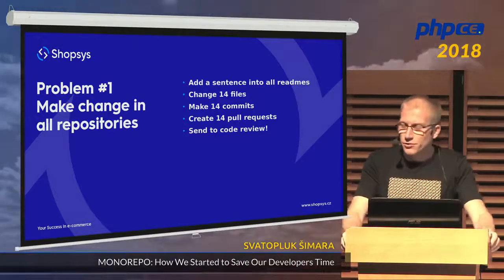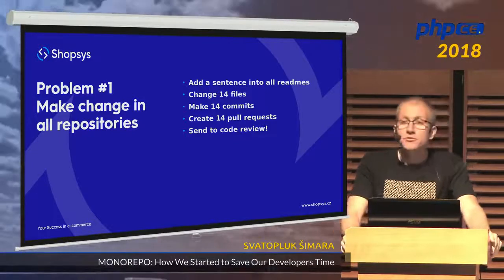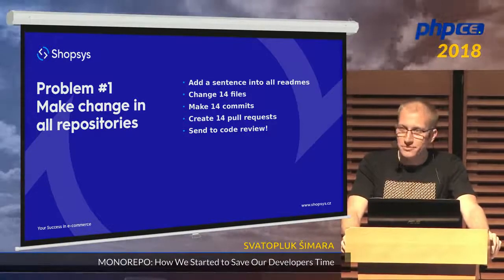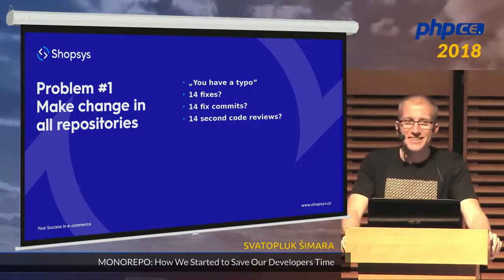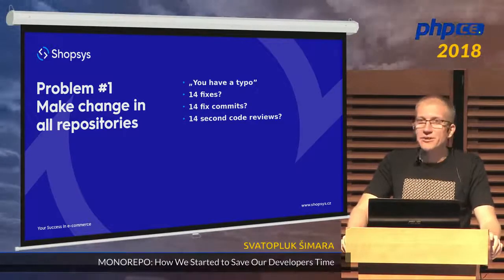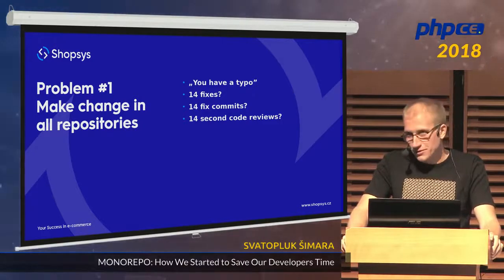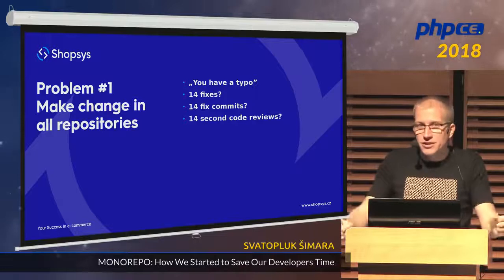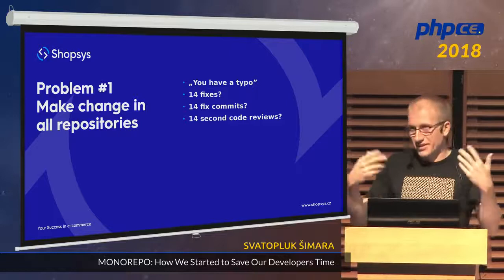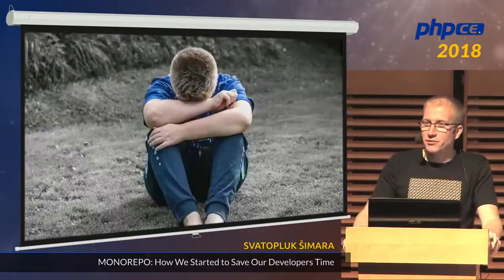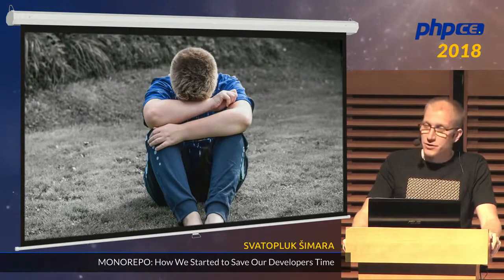Because at Shopsys, we do code review for everything. We also test it and business-validate it, and only then it's merged into master. So I sent it to code review and the reviewer told me I had a typo. So I had to do 14 fixes in 14 folders, 14 same commits, 14 pushes — and send it back asking for another review. That was the first problem.